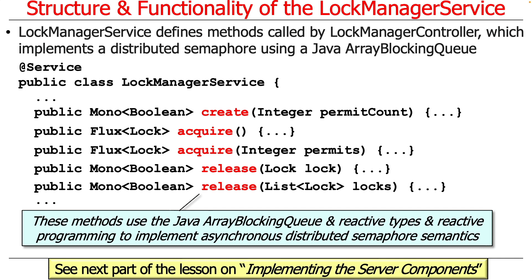Here are the methods: create, acquire, acquire, release, and release — and they return these reactive types. We're going to see some really clever implementations in the next part of this lesson that show how to use some advanced features from Project Reactor in order to do all of this. It's really interesting to take a look at.